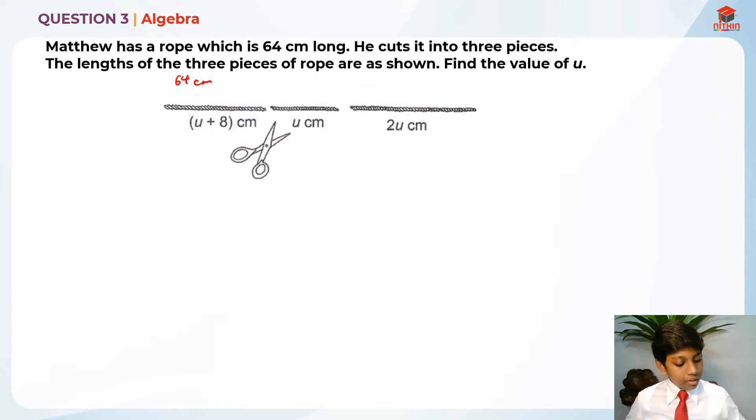First, what I'm gonna do is to find the total in algebraic form. So I'm gonna add U plus 8 cm plus U plus 2U, which will give me 4U plus 8 cm.